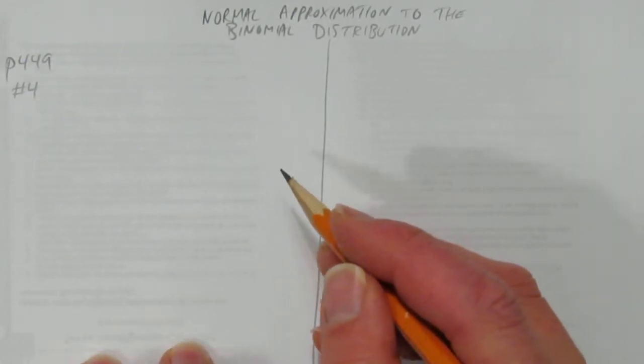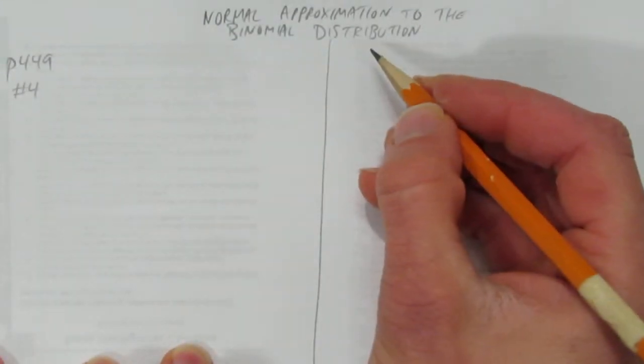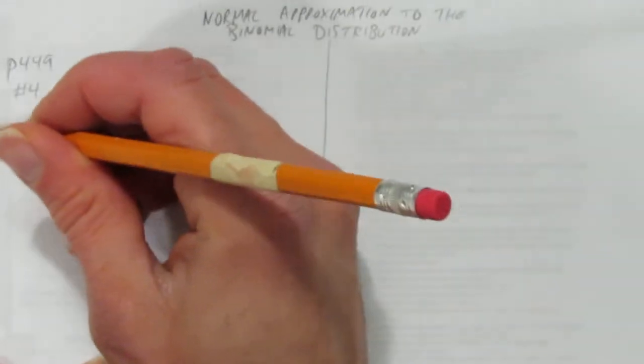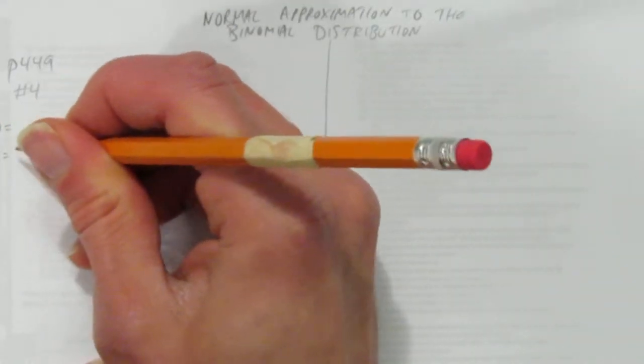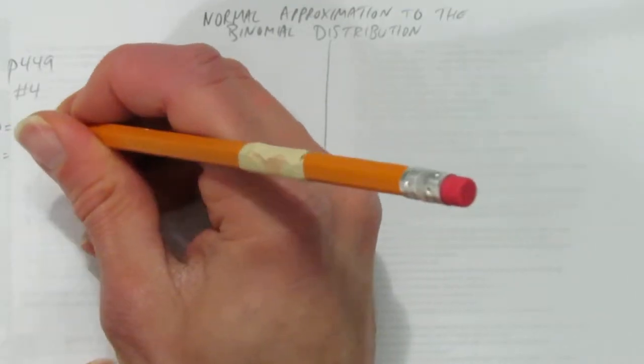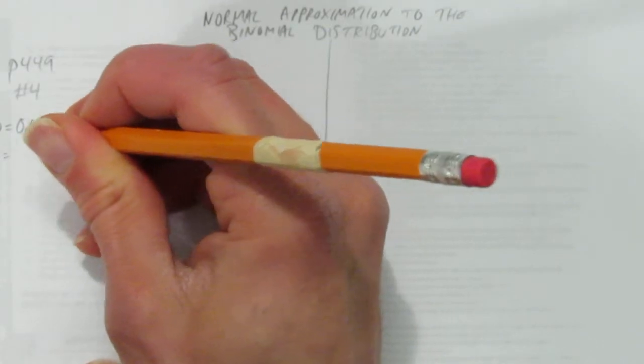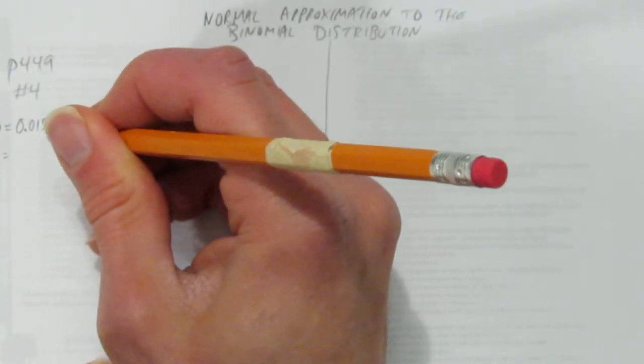First let's start by recognizing we're working with a binomial distribution. So we have to identify what's P and what's Q. The probability P of success is 1.5%, so make that a decimal, move it over two spaces, probability of success is 0.015.